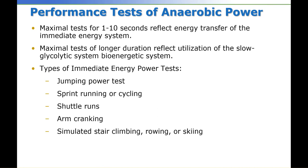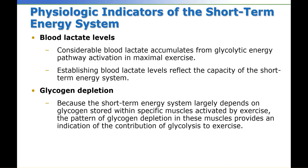Types of immediate energy power tests include jumping power tests, sprint running, cycling, shuttle runs, arm crank, simulated stair climbing, rowing, and skiing — these are logical indicators of the short-term energy system. Blood lactate: considerable blood lactate accumulates from the glycolytic energy pathway during maximal exercise. Establishing blood lactate levels reflects the capacity of the short-term energy system.